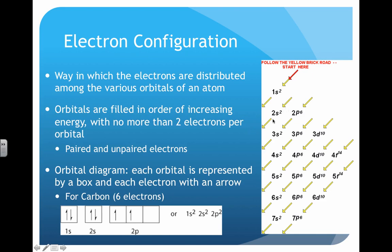The next level is 2s, and because it's an s-sublevel like 1s, we can put no more than two electrons there—again, up and down arrows. We still have two electrons left, so we follow the arrow and 2p comes next.